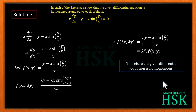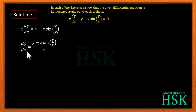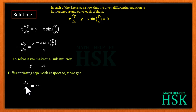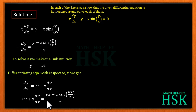Since the function is homogeneous of degree 0, the given differential equation is homogeneous. To solve it, we make the substitution y = vx, and differentiating with respect to x gives dy/dx = v + x·dv/dx. Substituting dy/dx and y = vx into the equation, we get v + x·dv/dx equals (vx minus x·sin(v)) divided by x.